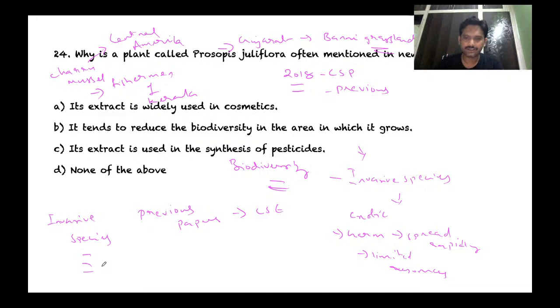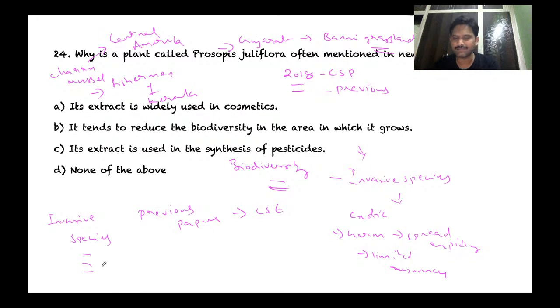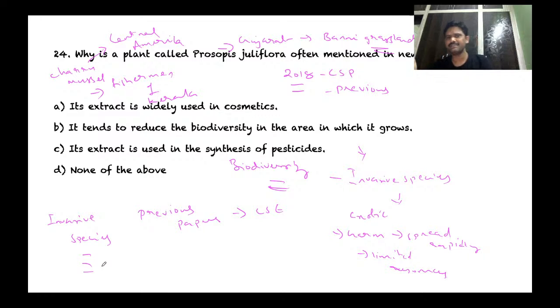Another example is the Charru mussel, an invasive species native to Central America that is spreading rapidly in the backwaters of Kerala and posing a significant threat to fishermen. Other invasive species include Lantana camera and Parthenium. Invasive species pose a major threat to biodiversity and are a very important topic for the exam.